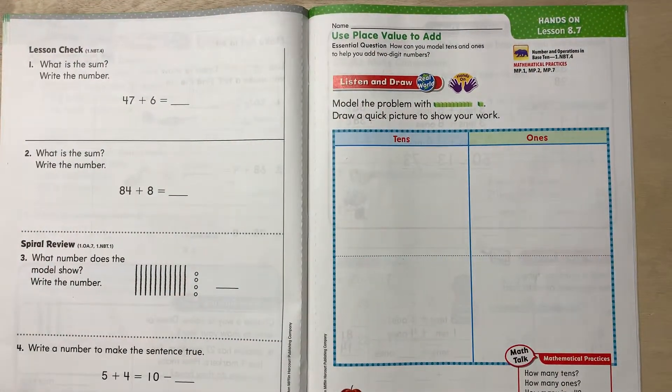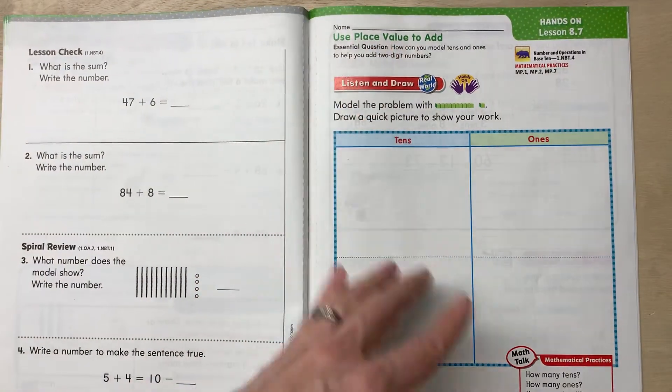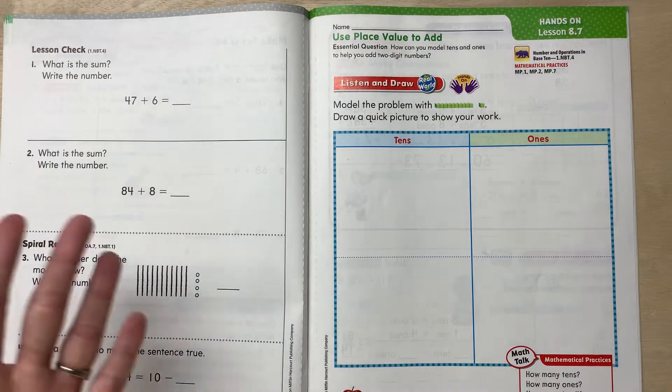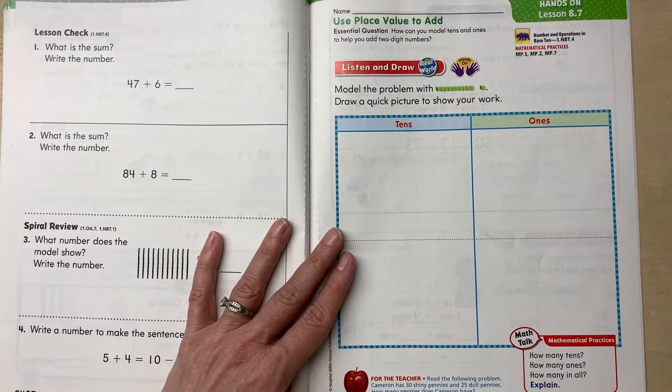This is another strategy to add double-digit numbers, and we've been doing some using place value to add. We've talked about place value strategy already, and we've been doing this. So this is a way for us to have extra practice in that area.